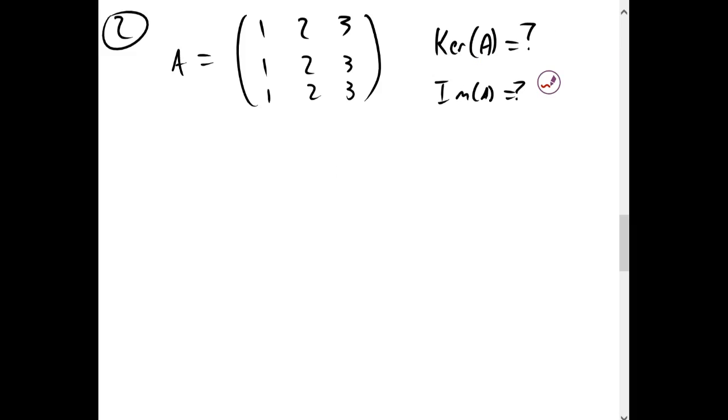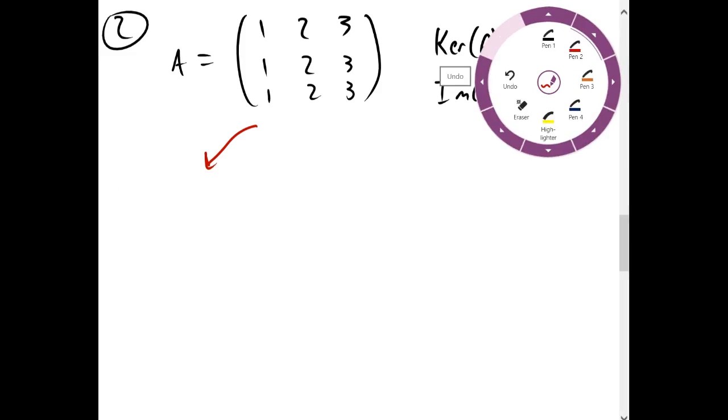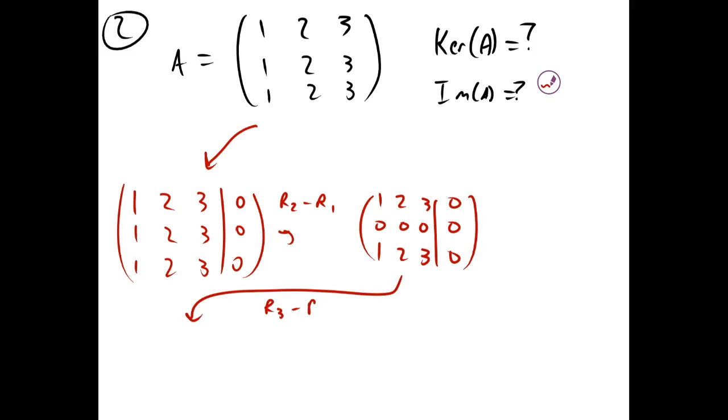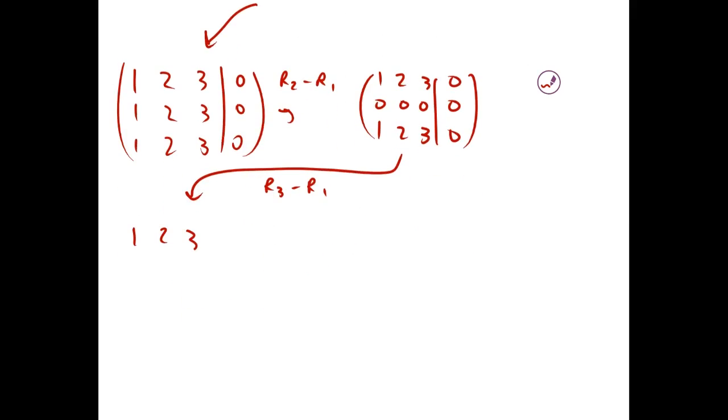So, by the same procedure, we know the kernel of A is going to be the set of all x, y, z that maps to 0, so we can just immediately put this in augmented form. And if we subtract R2 by R1, and we subtract R3 by R1, we get 1, 2, 3 on top,